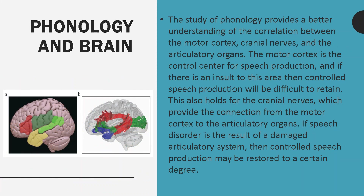The study of phonology provides a better understanding of the correlation between the motor cortex, cranial nerves, and the articulatory organs. The motor cortex is the control center for speech production, and if there is an insult to this area, then controlled speech production will be difficult to retain. This also holds for the cranial nerves, which provide the connection from the motor cortex to the articulatory organs. If a speech disorder is the result of a damaged articulatory system, then controlled speech production may be restored to a certain degree.